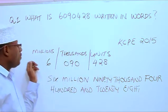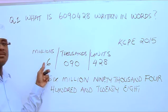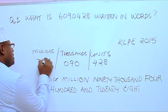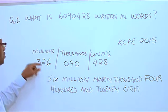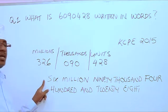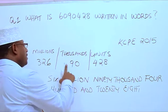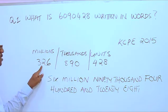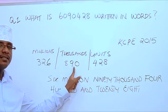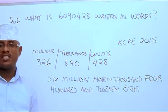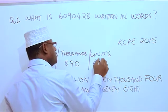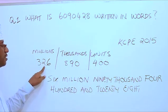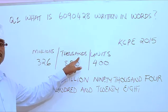For example, we could have twenty-six million or three hundred and twenty-six million. If we had 326 in the millions column, instead of six million you write three hundred and twenty-six million. If we also had an 8 in the thousands, it becomes three hundred and twenty-six million, eight hundred and ninety thousand, four hundred and twenty-eight. The number would be written as 326,890,428.